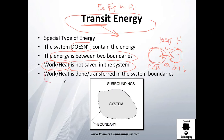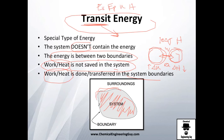Work or heat are done or transferred in the systems only at the boundaries, whereas internal energy will affect everything, or kinetic energy will affect all the system because the whole system is moving or the whole system is high up on the mountain. But work and heat are interacted at the boundaries.